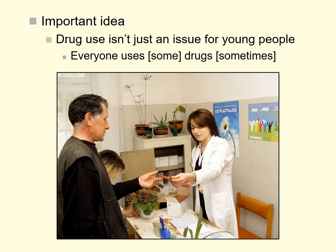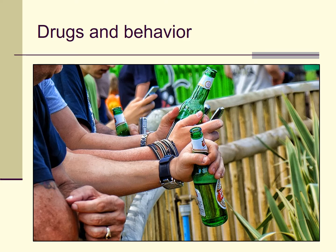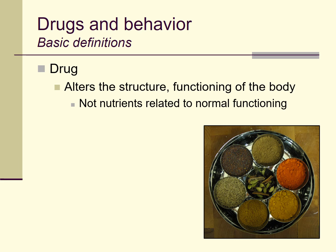With that in mind, let's move on and talk about drugs and behavior, exploring some basic definitions that may seem a little dull or obvious but will be helpful in future lectures. For our purposes, a drug is anything that alters the structure or functioning of the body, especially of the nervous system. Also, drugs are substances which have these effects but which are not nutrients necessary for normal functioning. Arguably, anything you eat is likely to alter your body, but food provides nutrition you actually need to survive.